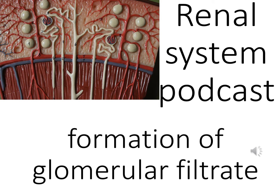Nephrons are microscopic — quite long, but on a microscopic scale. When we talk about the cortex, medulla, pelvis, and ureters, we're talking about the macroscopic structure of the kidneys — the large-scale structure you can see during anatomical dissection. But when we're talking about nephrons, we're talking about the microscopic structure. When you cut a kidney open, you can't actually see the nephrons without the aid of a microscope.